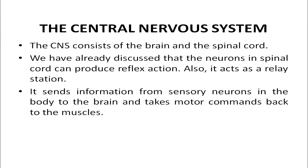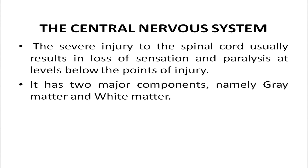The central nervous system consists of the brain and spinal cord. The neurons in the spinal cord can produce reflex action. It also acts as a relay station — it sends information from sensory neurons in the body to the brain and takes motor commands back to the muscles. We obtain stimuli from outside, which are sent to the brain as information, and then the brain reacts by sending motor commands back to the muscles. Severe injury to the spinal cord usually results in loss of sensation and paralysis at levels below the point of injury.